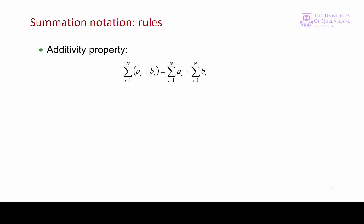The first rule is if we have two series in the summand, for example, ai plus bi, we can separate those into two separate summations. The sum of ai plus the sum of bi. Or we could go back the other way. That's the additivity property.